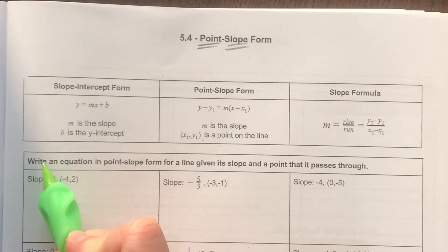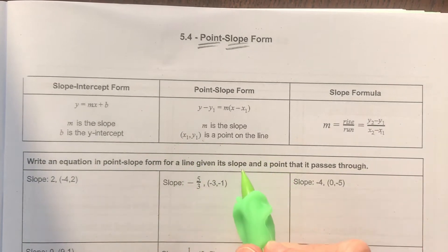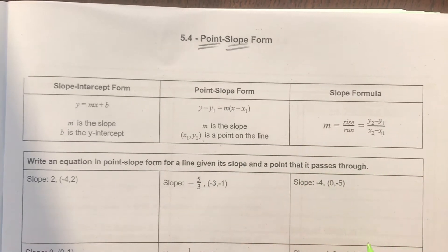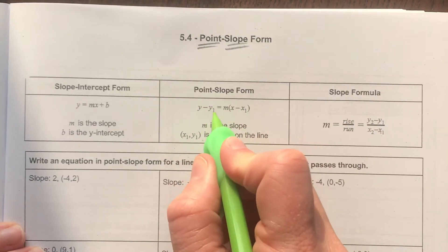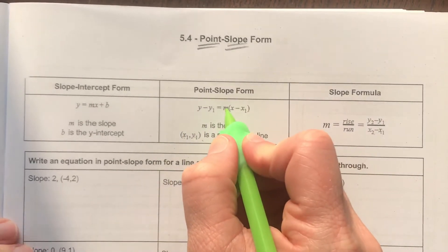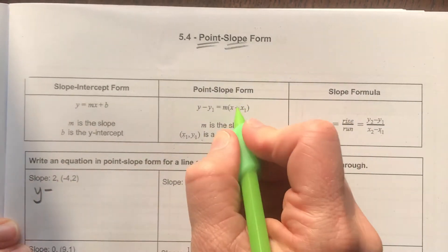So the first task here says to write an equation in point-slope form for a line given its slope and a point that it passes through. So I'm going to use this formula that you see here. x1, y1 is the point that we're going to be given, and m is our slope. So if I plug in what I have here with my formula,